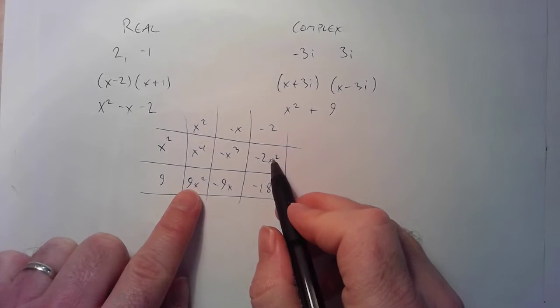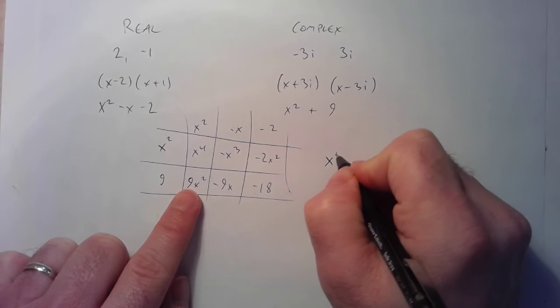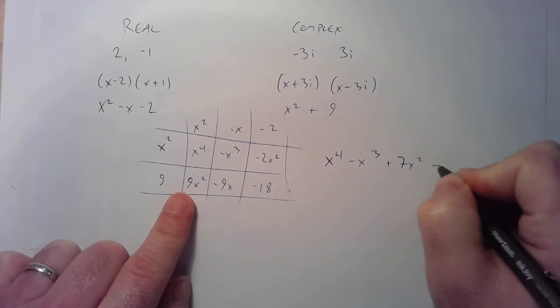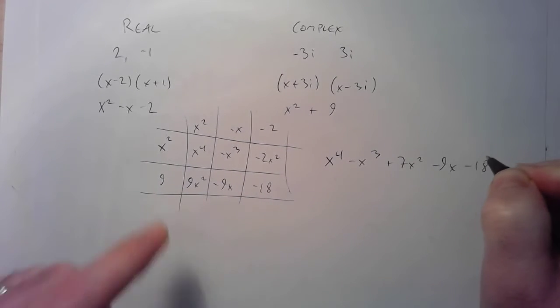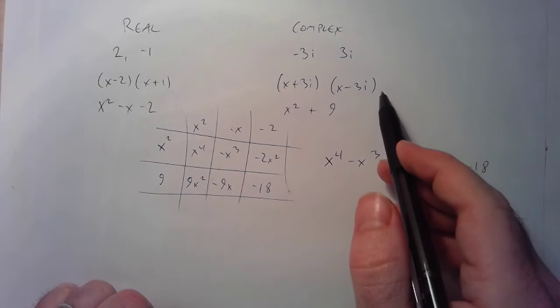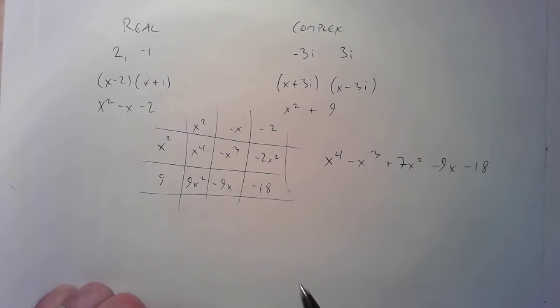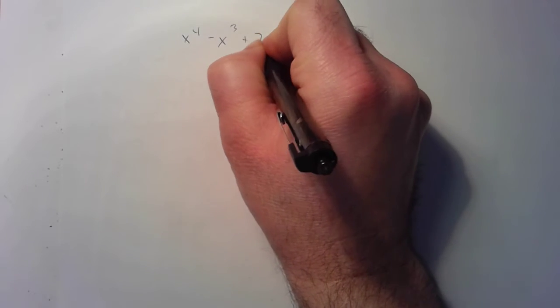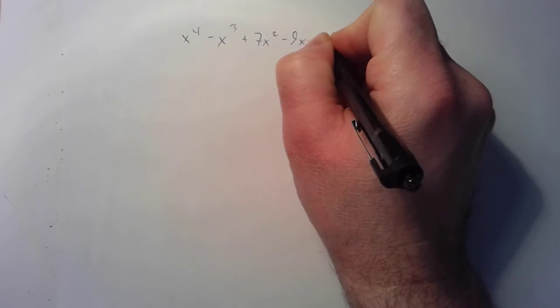Those two squared terms go together. So I've got x to the fourth minus x to the third, 9 minus 2 is plus 7, x squared minus 9x minus 18. So this is going to be a fourth degree polynomial with those factors and those zeros. On the next page, I'm going to start with that problem and show how it would be solved, and we can compare the solution to how the problem was generated. The problem is x to the fourth minus x cubed plus 7x squared minus 9x minus 18.